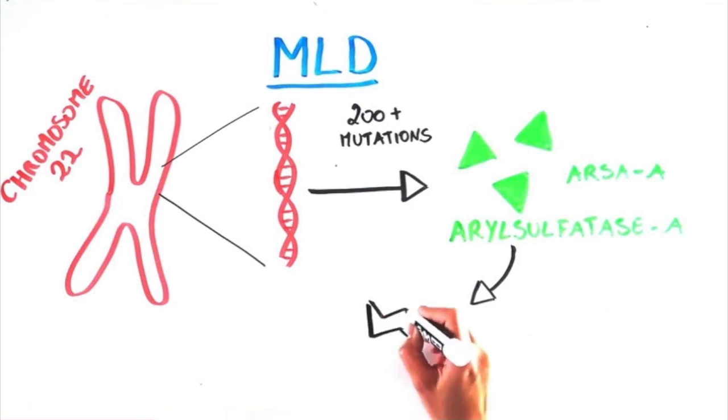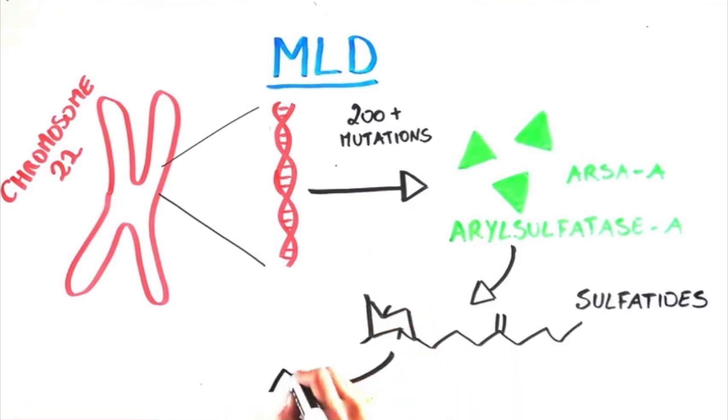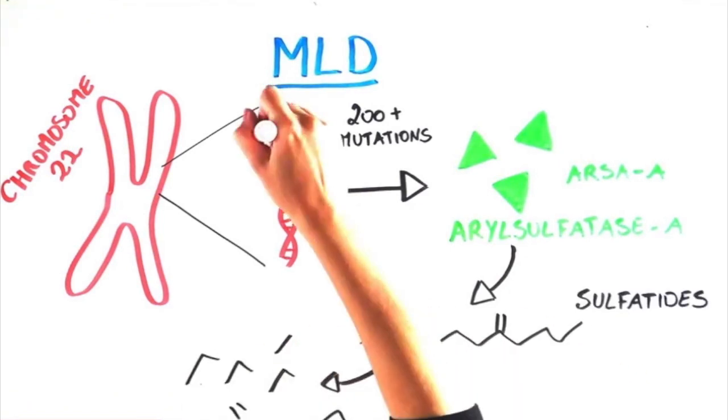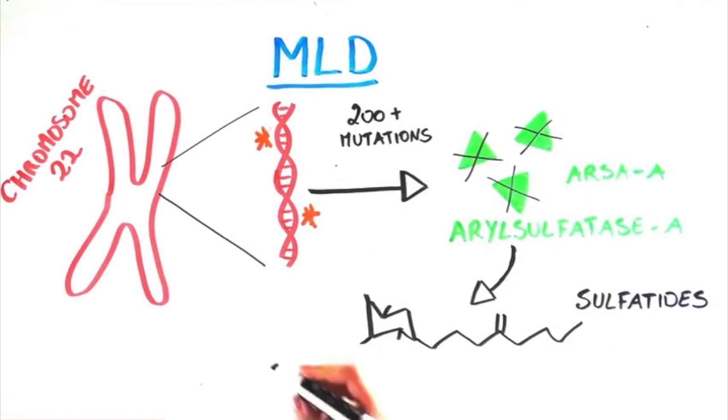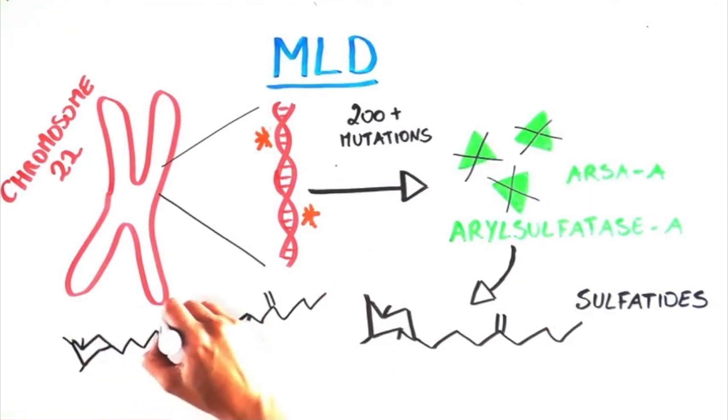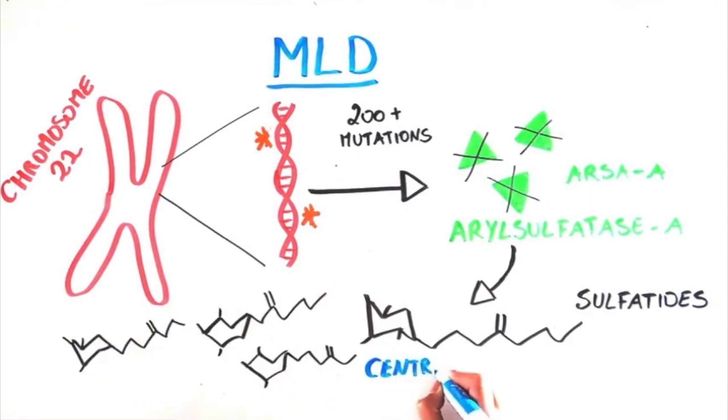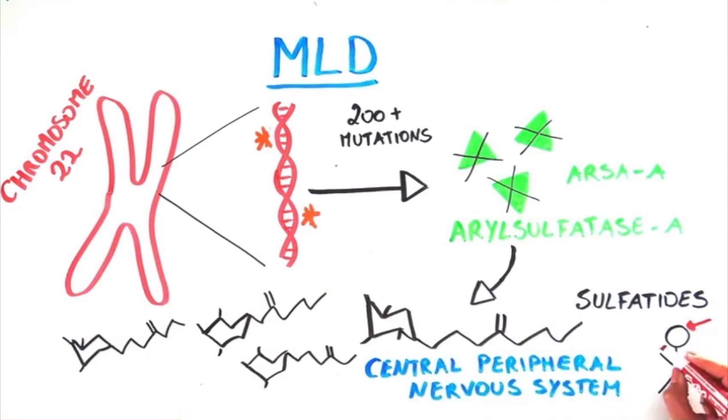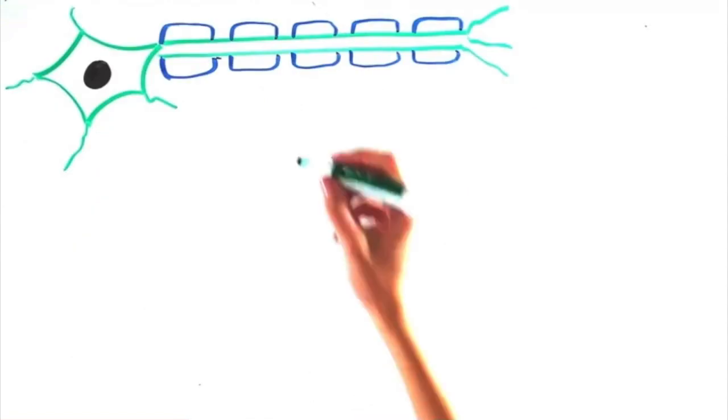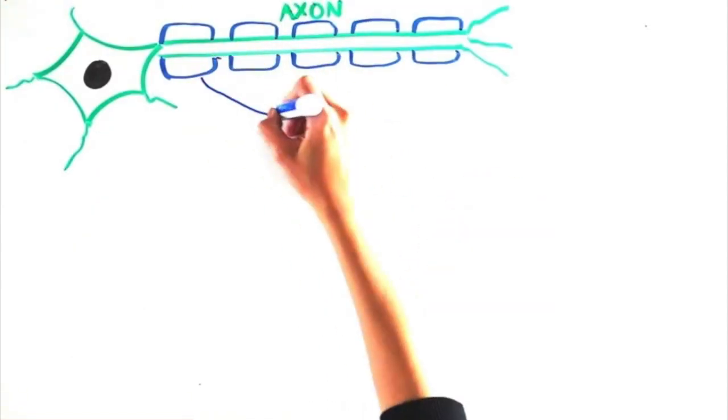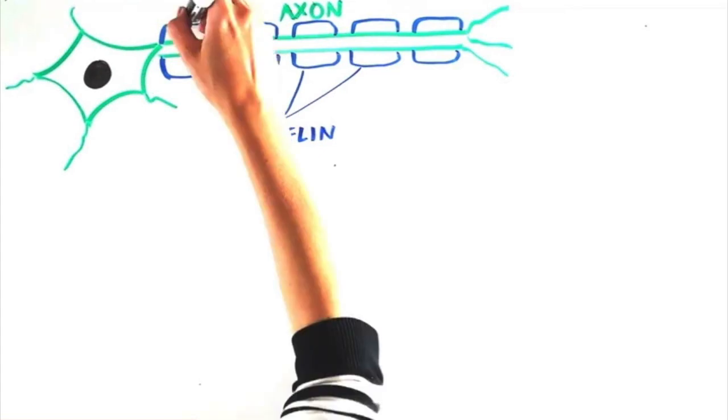This enzyme breaks down sulfatides, a normal byproduct of cell life. When ARSA-A is mutated, the sulfatides accumulate throughout the body, especially in the central and peripheral nervous systems - the brain, spinal cord, and nerves. The accumulation results in the protective sheath that surrounds the axons of neurons, which we call myelin, being destroyed.